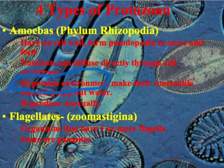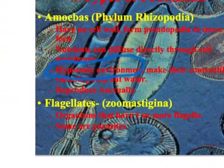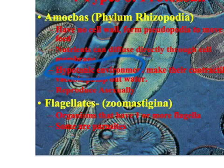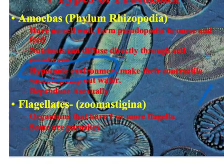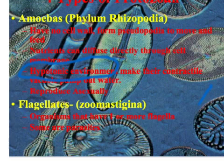Flagellates, on the other hand, are considered more animal-like, which is why you have Zoomastiginia as the phylum name. They are organisms that have one or more flagella, and some can be parasitic.